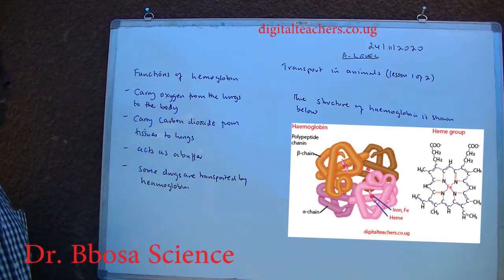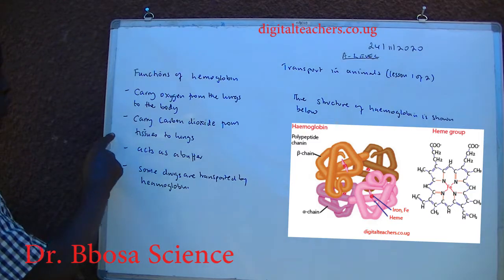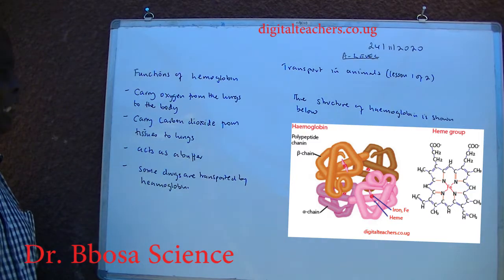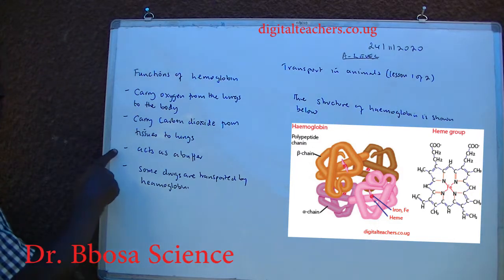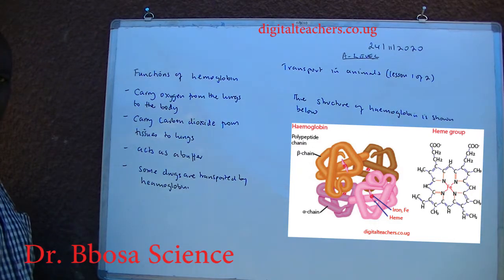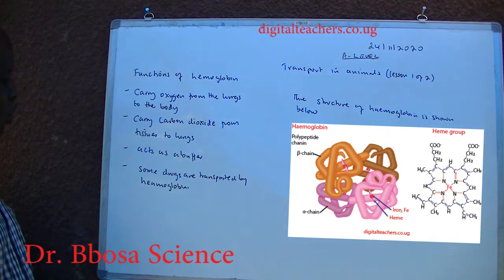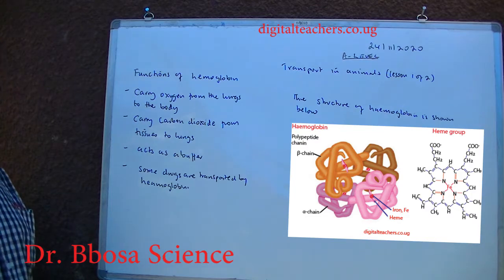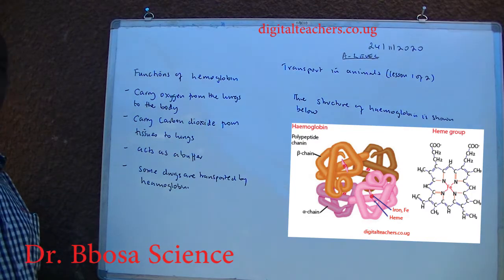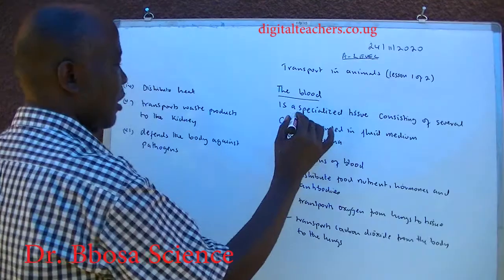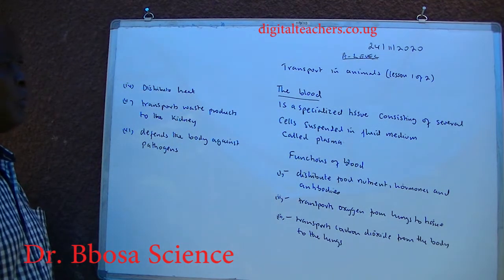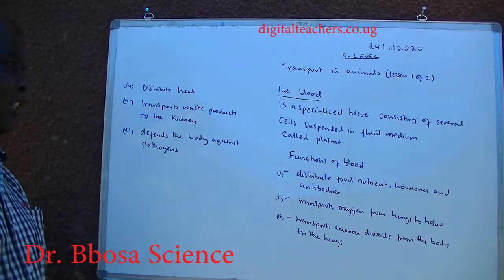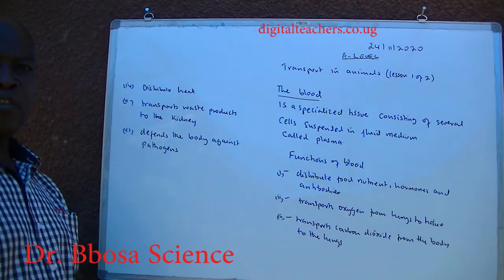Hemoglobin: 1. carries oxygen from lungs to the body. 2. carries carbon dioxide from tissue to the lungs. 3. acts as a buffer to maintain pH of blood. 4. some drugs are transported by hemoglobin.